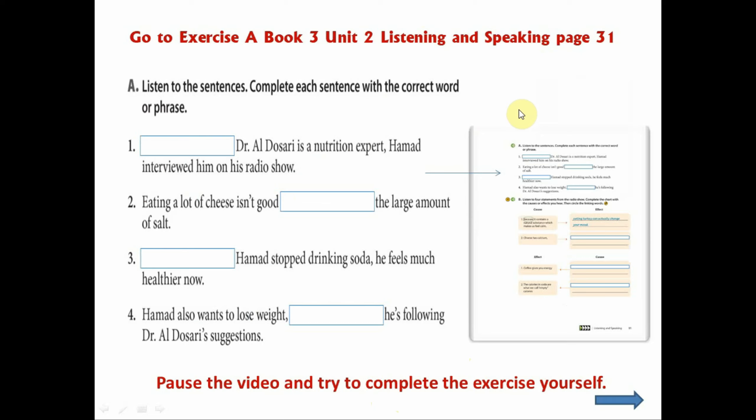Go to exercise A, Book 3, Unit 2, Listening and Speaking, page 31. There you'll see an exercise. Listen to the sentences and complete each sentence with the correct word or phrase. You have to decide which linking word for cause and effect to use for each sentence.